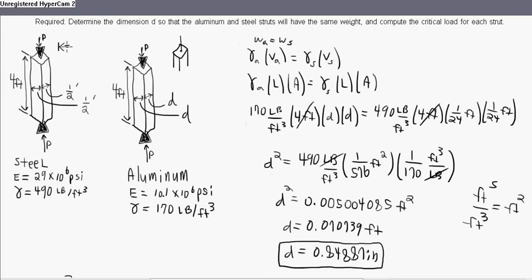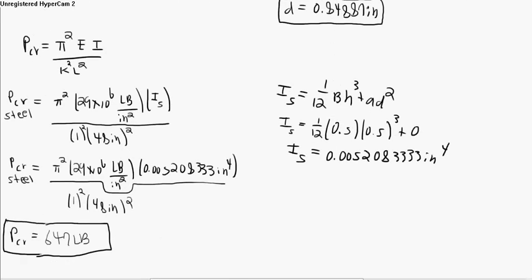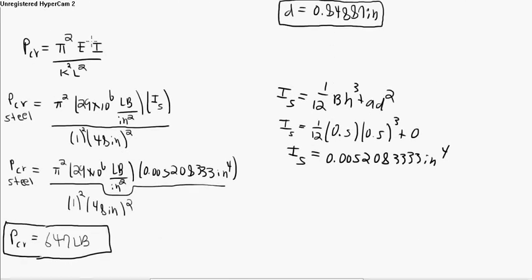This is a pin-pin condition for each one of these columns. And since it's a pin-pin condition, the k equals one for each of these. The k is one for the steel, the k is one for the aluminum.